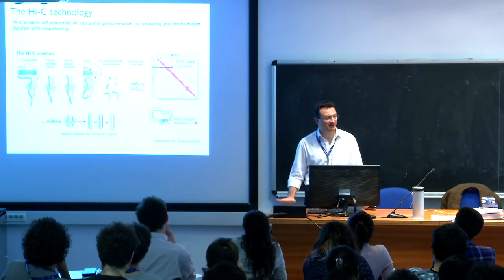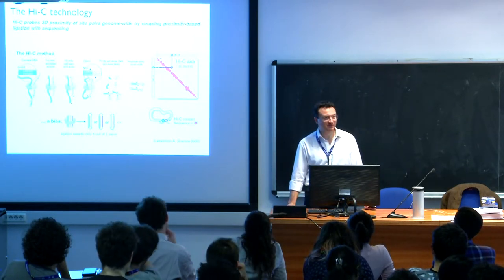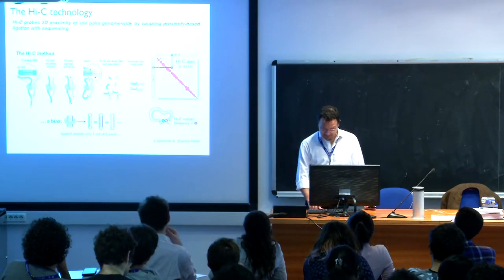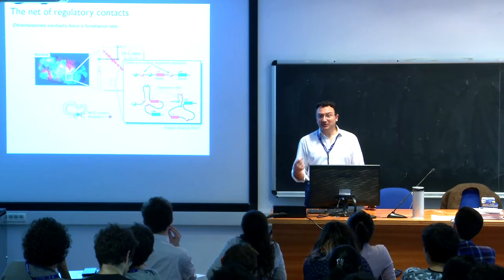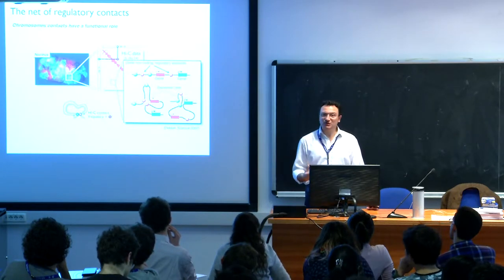From a physicist's point of view, this is quantitative data — not just a picture of two things contacting. We have frequencies of contact, a proxy for contact frequency, with all the biases I mentioned.